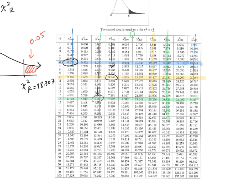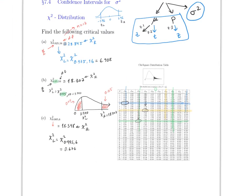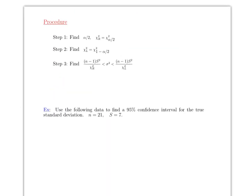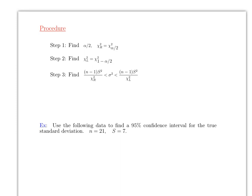Once you know how to find the left side and the right side, you can find the confidence interval for sigma squared. The process is: first, divide alpha by 2. Then find chi-square right, then find chi-square left using 1 minus alpha over 2. Finally, plug into the formula. There is no plus or minus in this formula because the values are not symmetrical — just plug them in directly.